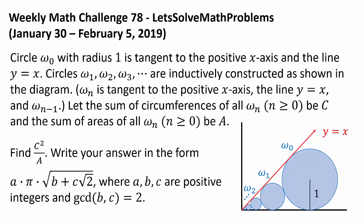Write your answer in the form a times pi times square root of b plus c times square root of 2, where a, b, and c are positive integers and gcd(b, c) equals 2.